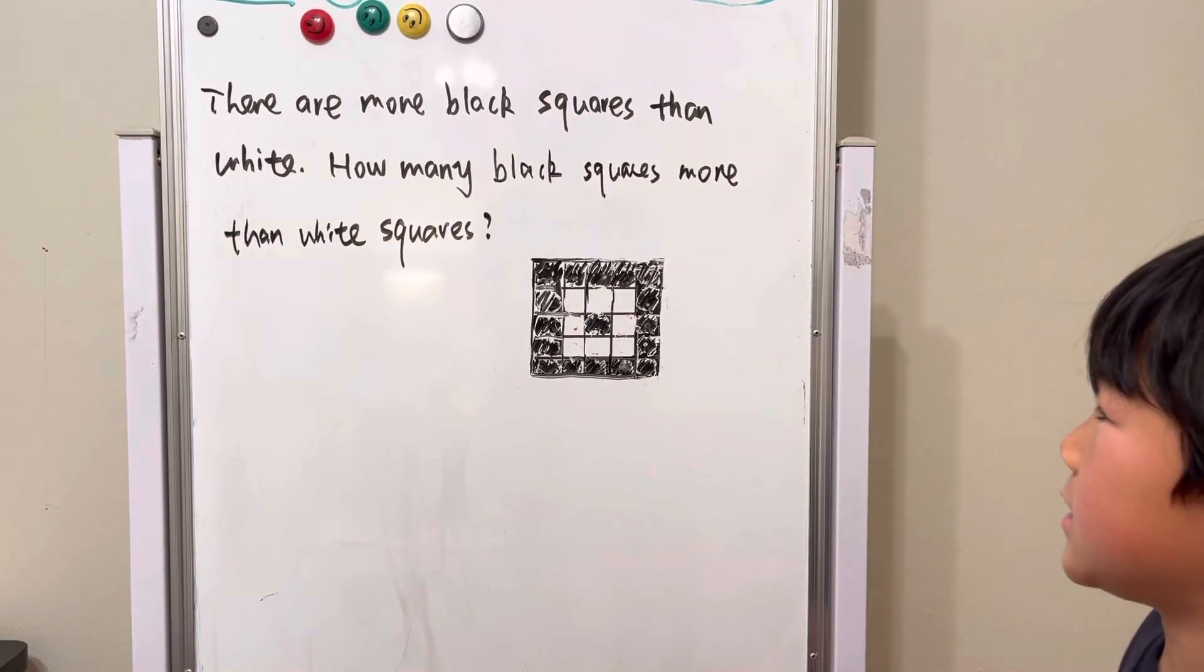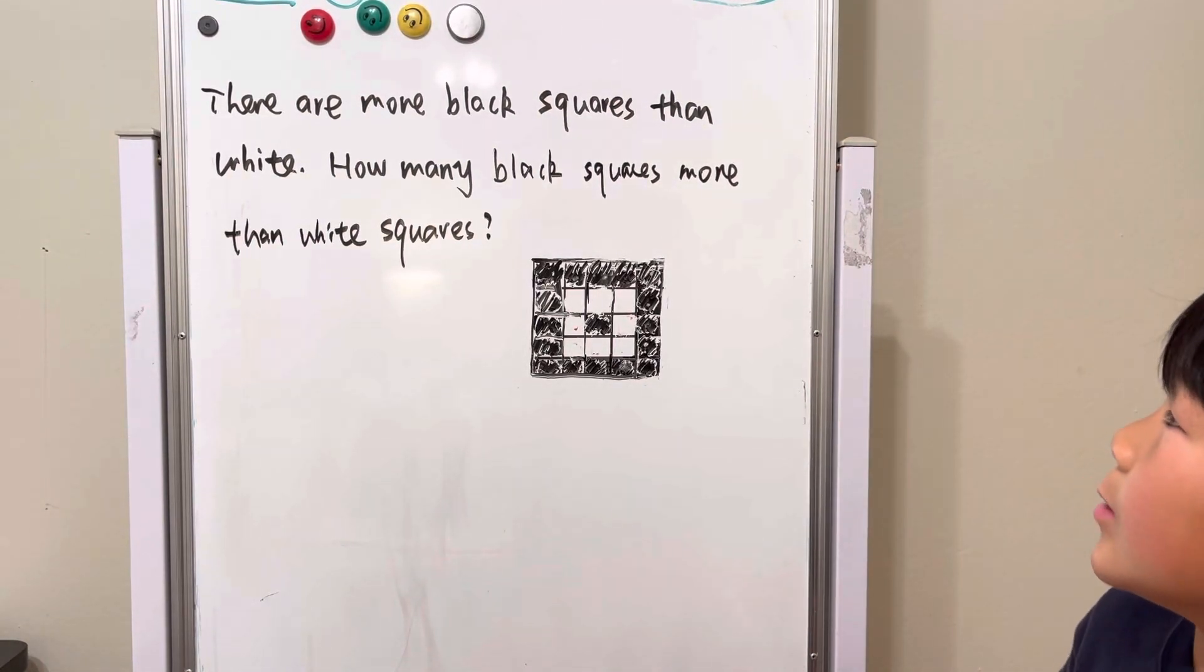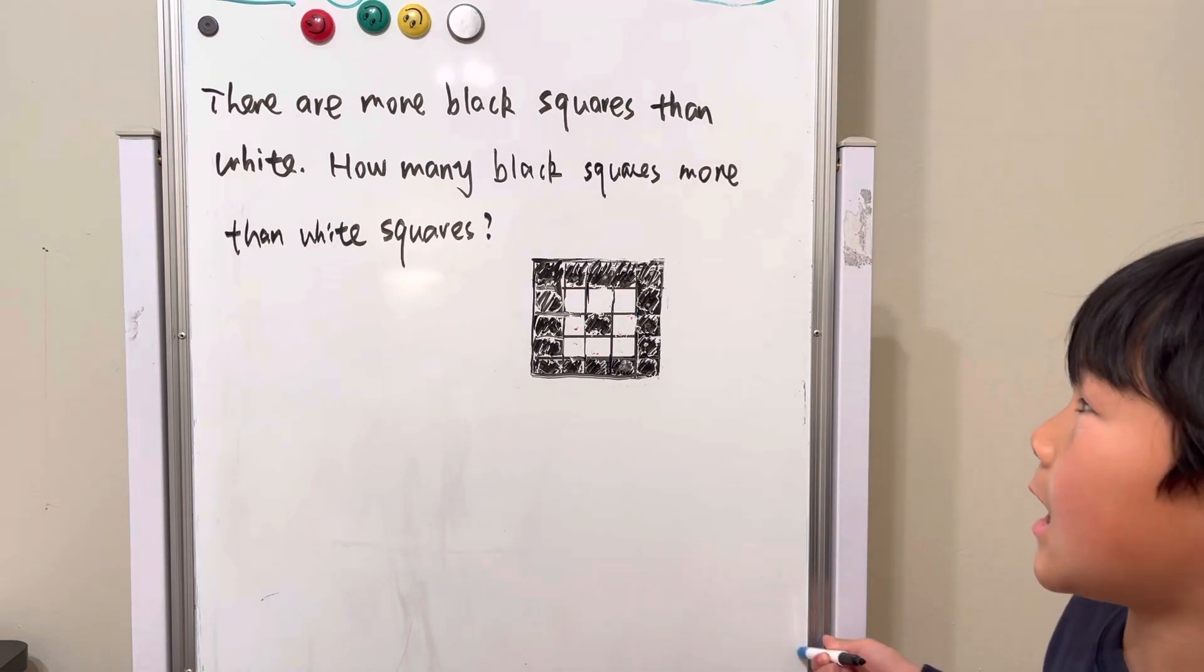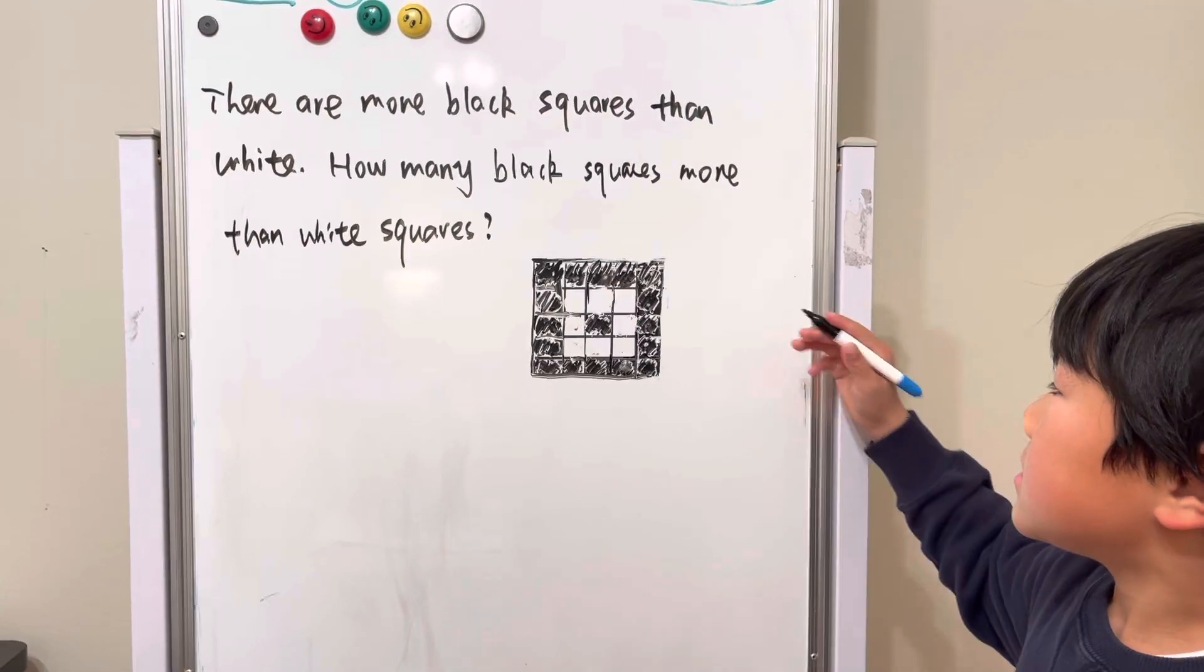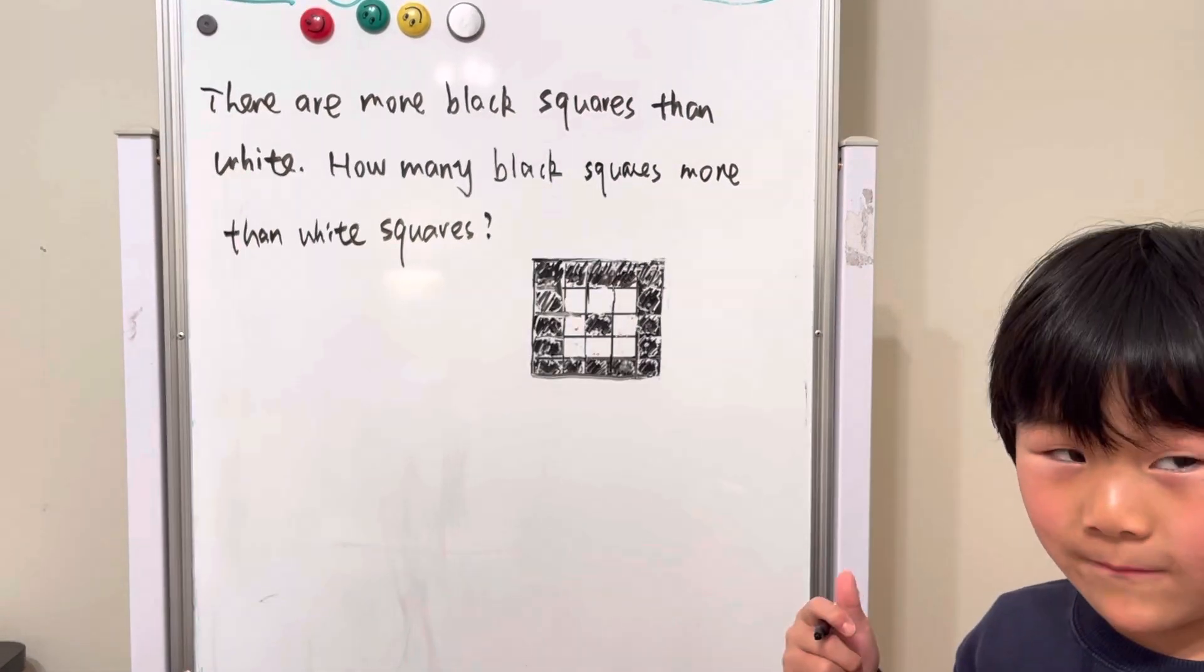So today we're going to look at this question. There were more black squares than white. How many black squares more than white squares? So we're going to count them first.